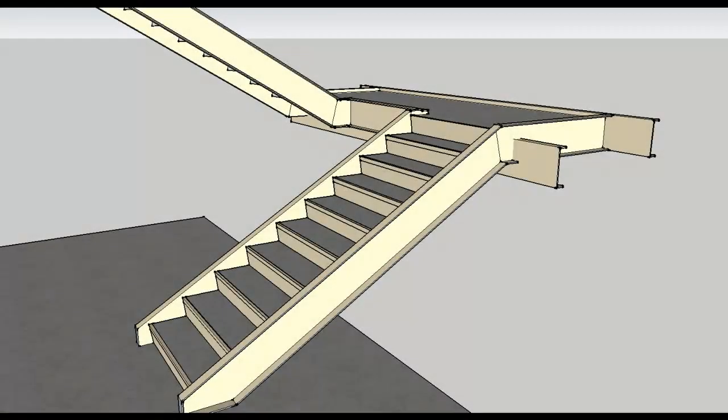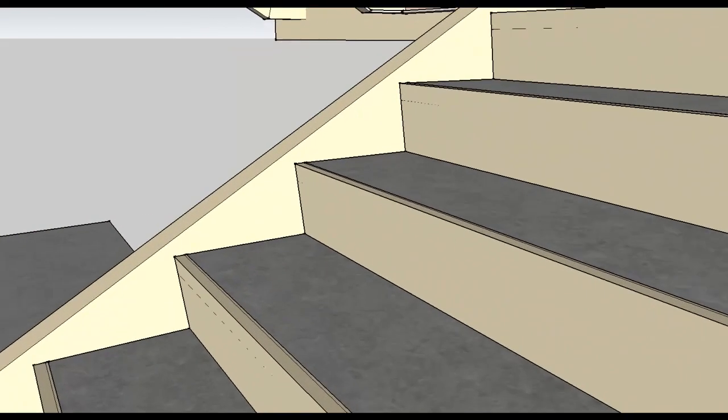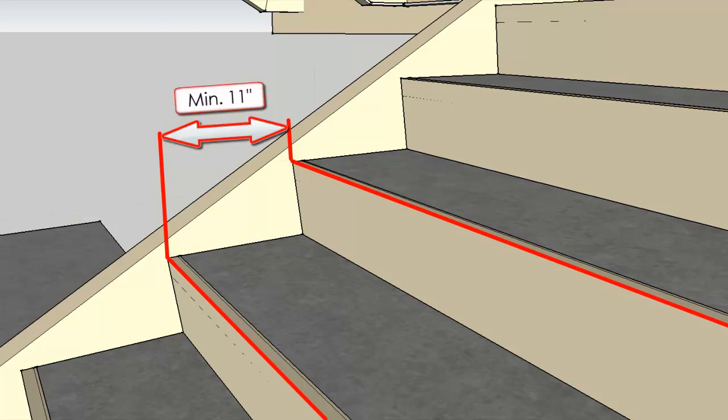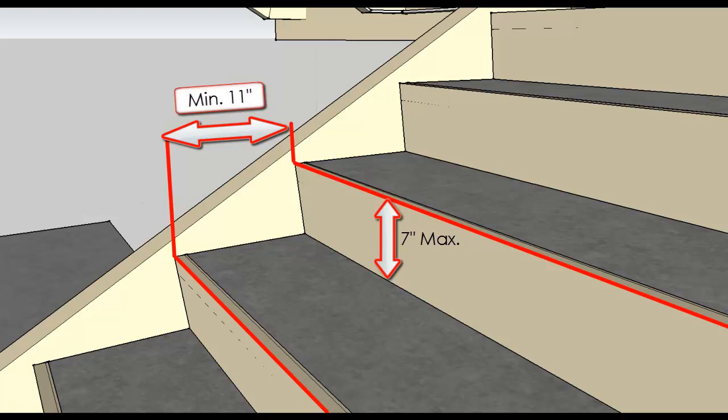Typically, each riser for commercial stairs cannot be greater than 7 inches in height, while the tread length, which is measured from the nose of one tread to the nose of the tread above, must be a minimum of 11 inches. The industry standard term for this requirement is 7 inches of rise for every 11 inches of run.